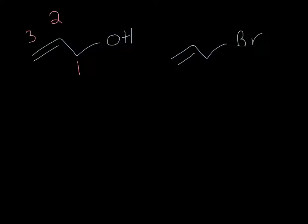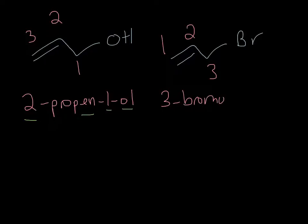One, two, three. This would be 2-propen-1-ol. The two tells us where the double bond is—it starts at the second carbon. The one tells us where the alcohol is. Over here, the highest priority group is the alkene, which has higher priority than a halide. So one, two, three—this would be 3-bromopropene. Since the double bond is at the one position, I can leave out the one. If there's no locant for the double bond, it's at the one position.